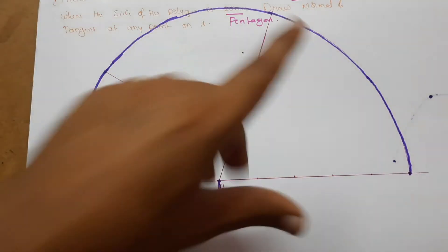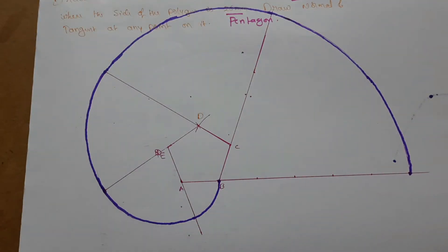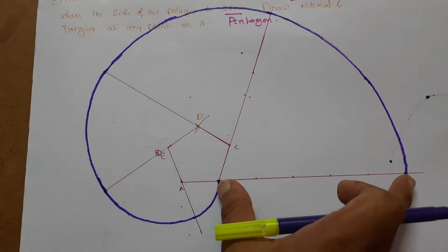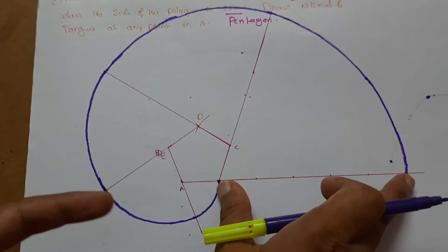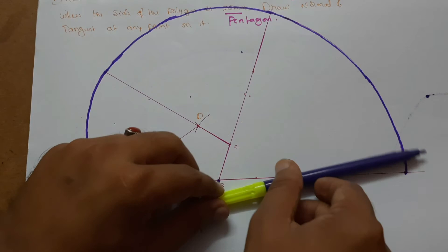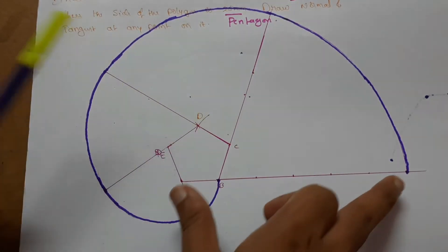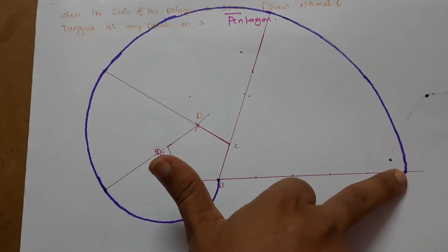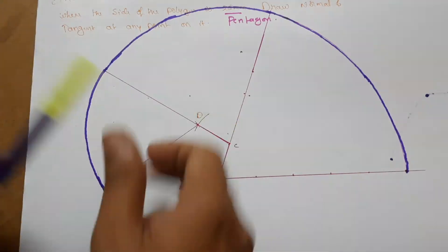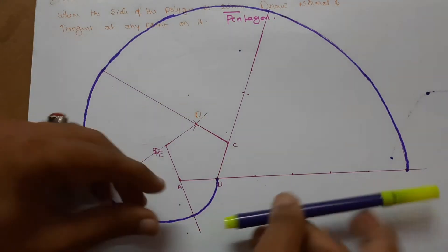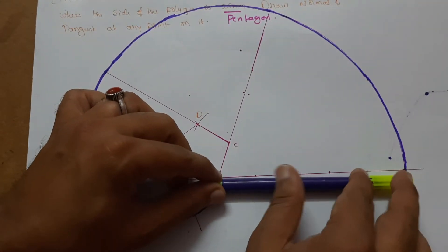So this is my involute for this pentagon. Let me explain how the involute works. If we have this line, we can rotate this line. If this line is rotating on this pentagon — if this point is rotating — suppose this is a line.